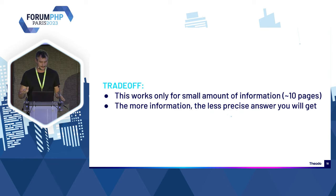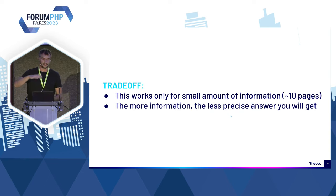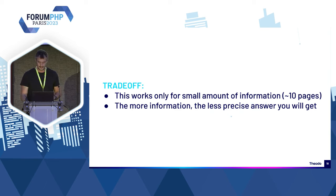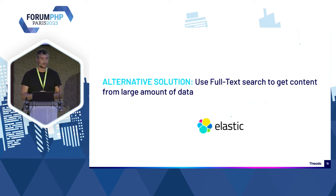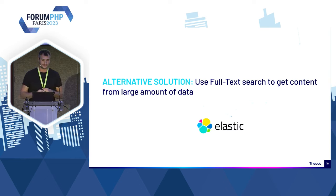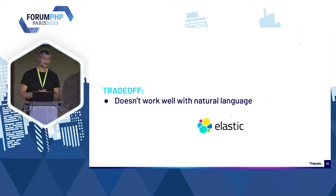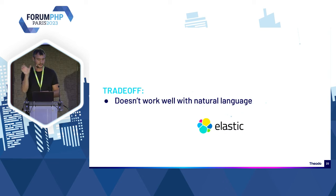Par exemple, si vous voulez poser des questions sur Wikipédia, ça ne marche pas. De plus, plus vous donnez d'informations d'un coup — la limite est entre 10 et 20 pages — plus il va avoir du mal à récupérer l'information au milieu. Une solution alternative serait Elasticsearch pour faire du full-text search, mais le problème c'est qu'Elasticsearch ne comprend pas les questions complètes. Il est très bon pour reconnaître un nom propre, mais pour des phrases entières ça ne marche pas du tout.